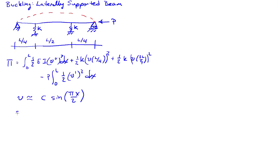We're going to need to know the first derivative here, which is going to be pi over l, c cosine pi x over l. And the second derivative is going to be minus pi over l squared, c sine pi x over l.